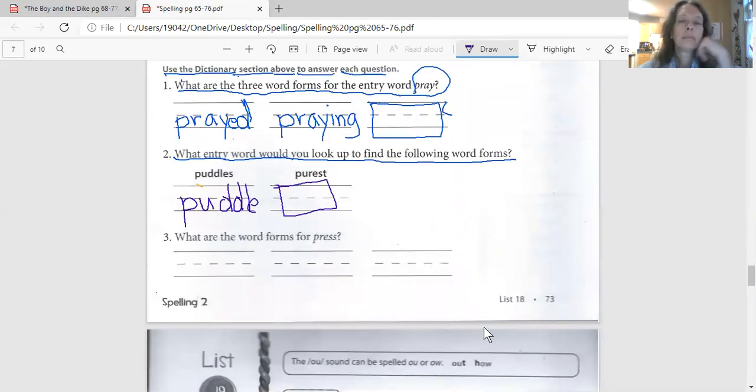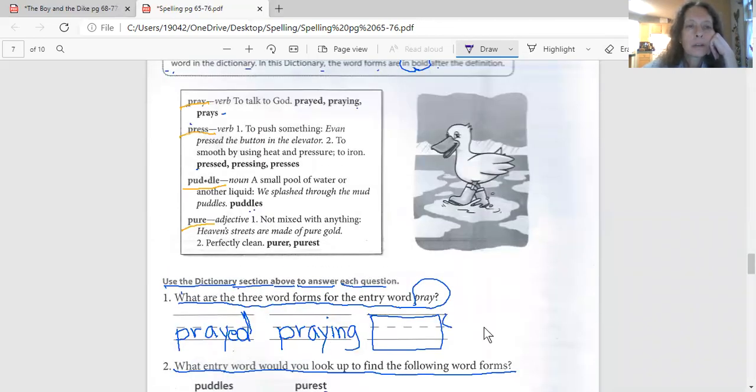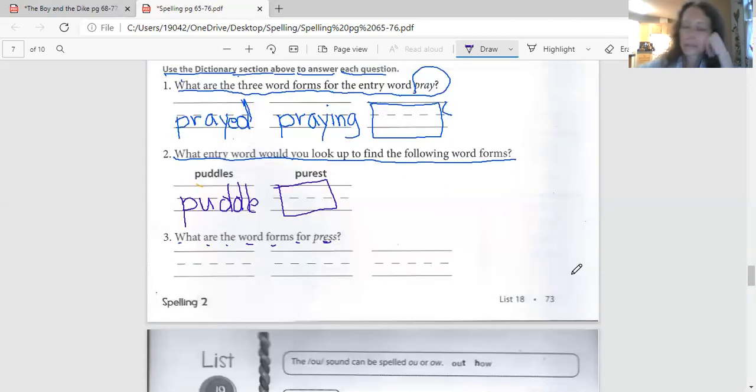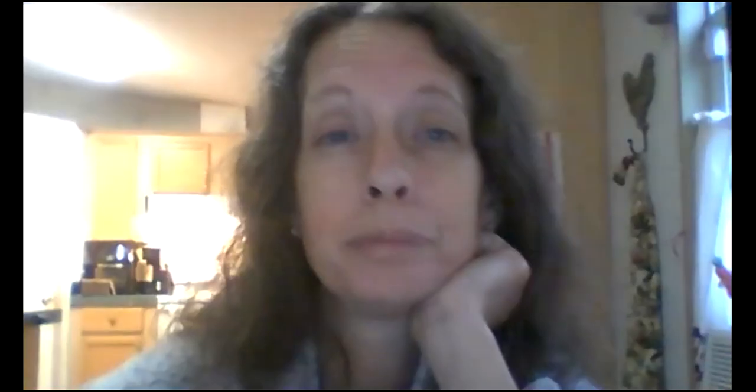And last one. It says, what are the word forms for press? Press. Press is up here. It's asking you for the word forms. I see them right down here. Those are what go down in here. So let me give you some boxes. There you go. I need you to fill that in for me. Get it? Got it good? All right. I love it. I love you. I will see you back here for social studies shortly. Bye.